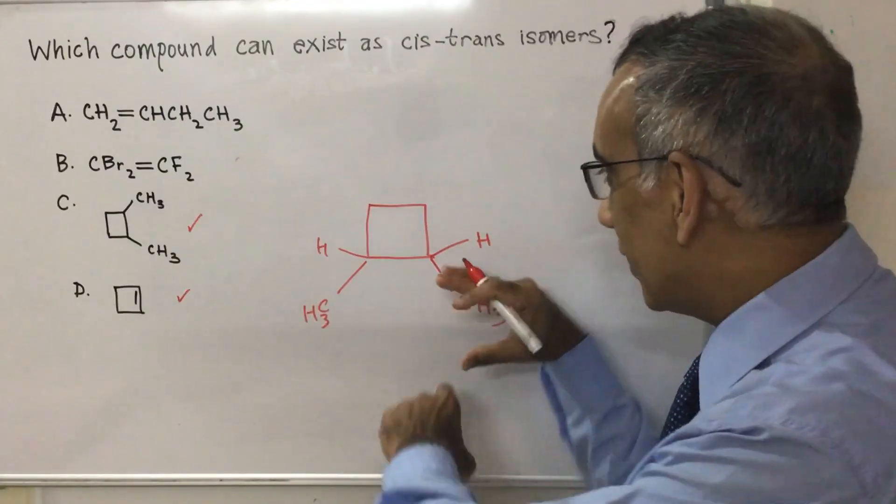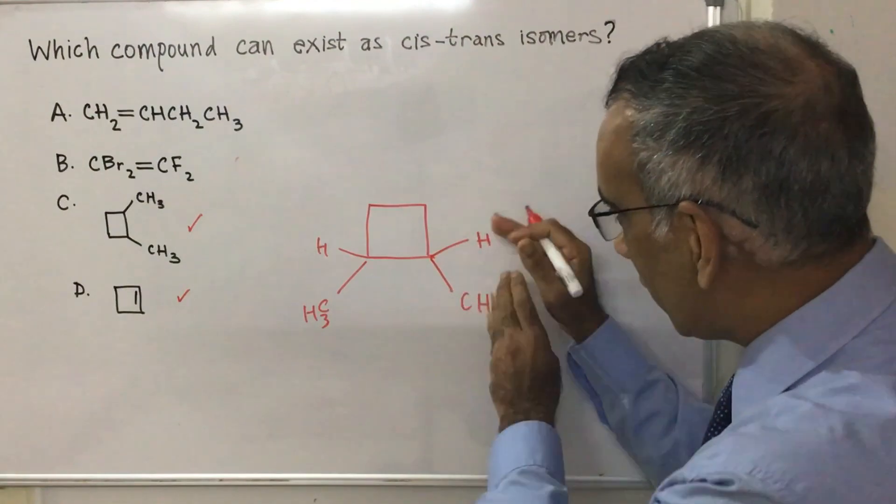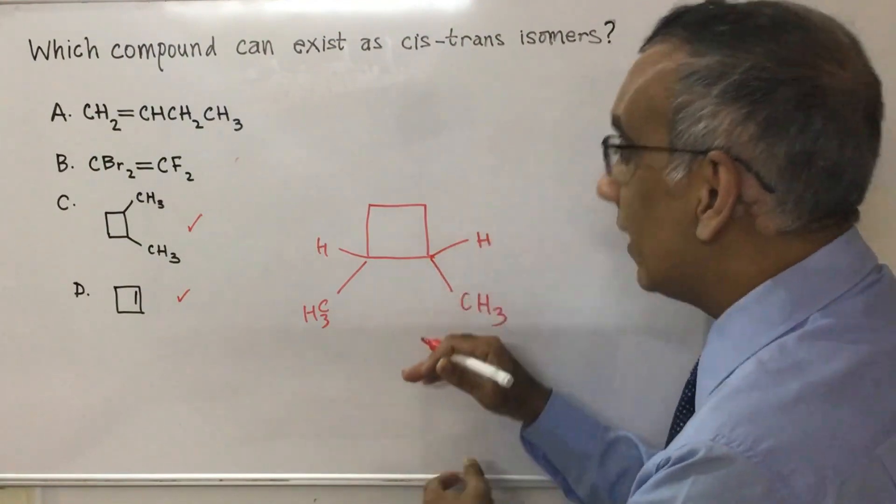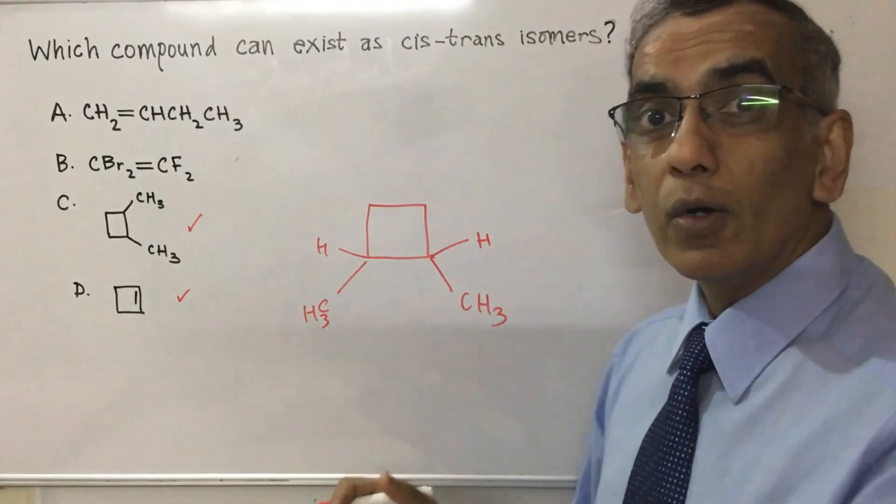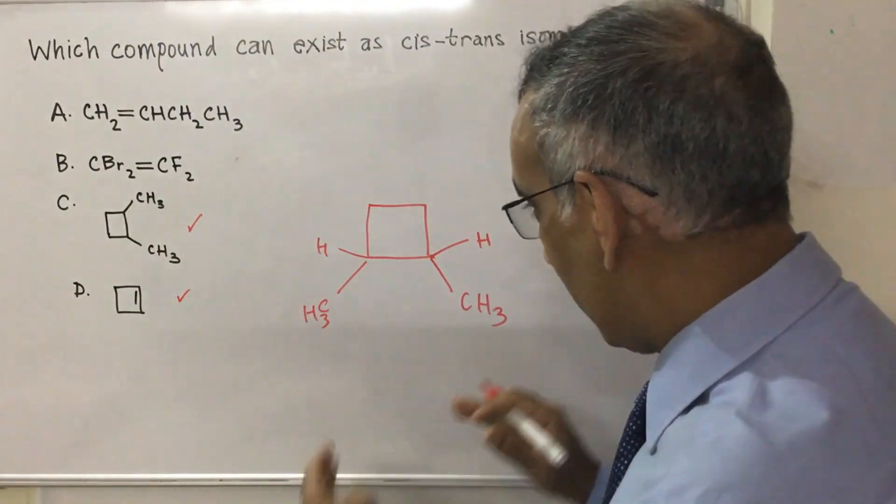And once you have this scenario, it's going to be impossible for there to be rotation between this and this. And this too would give rise to cis-trans isomerism or to EZ isomerism.